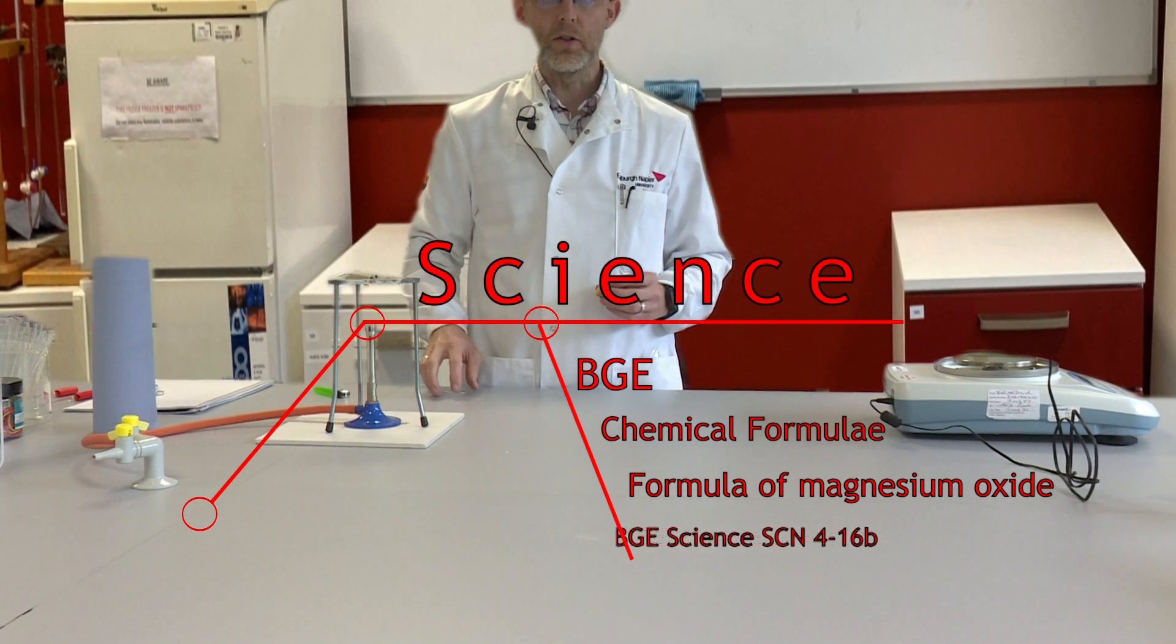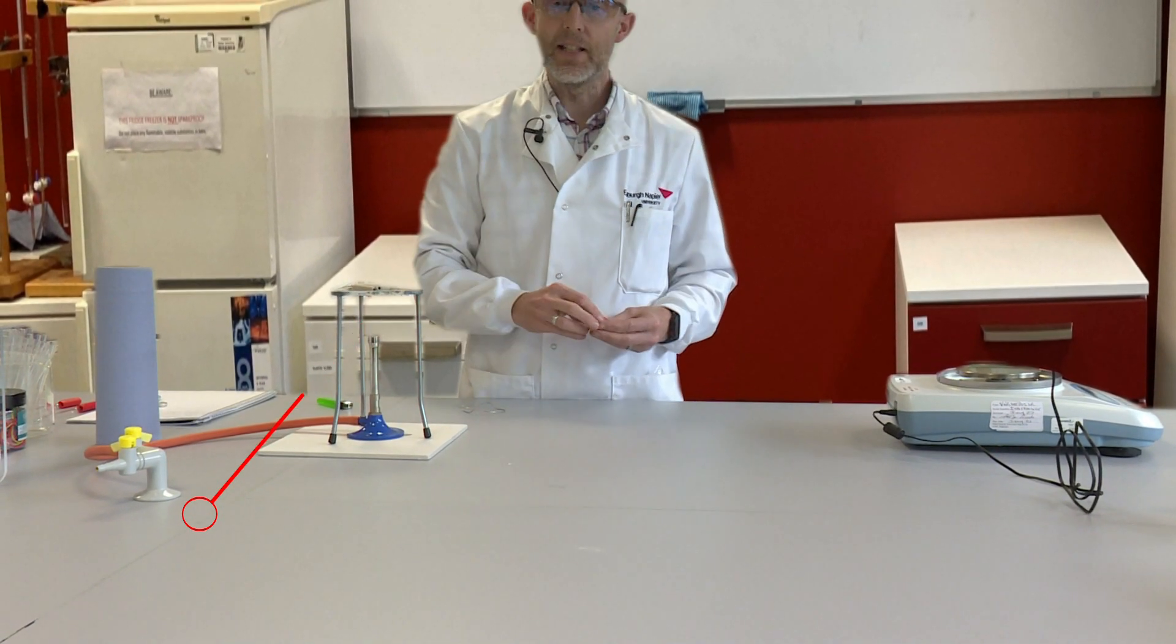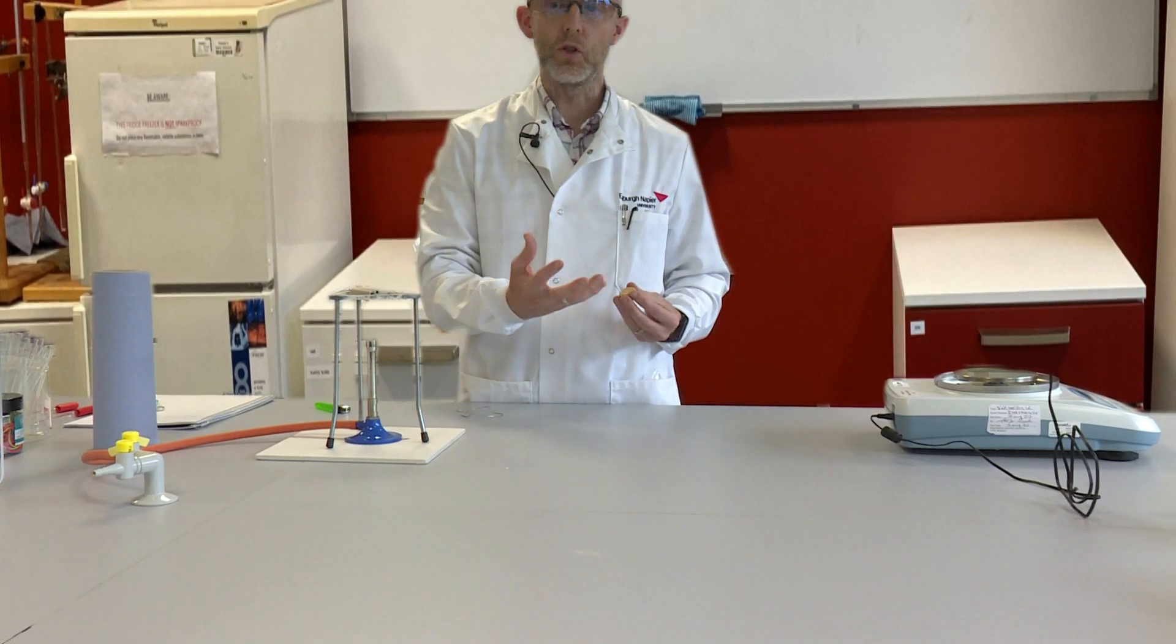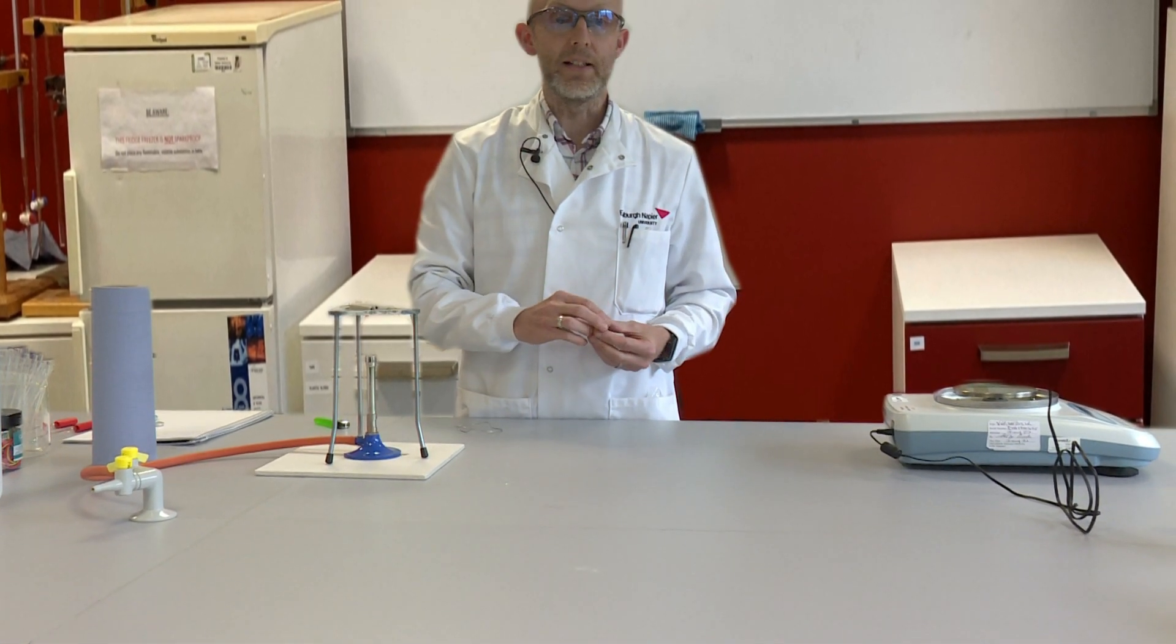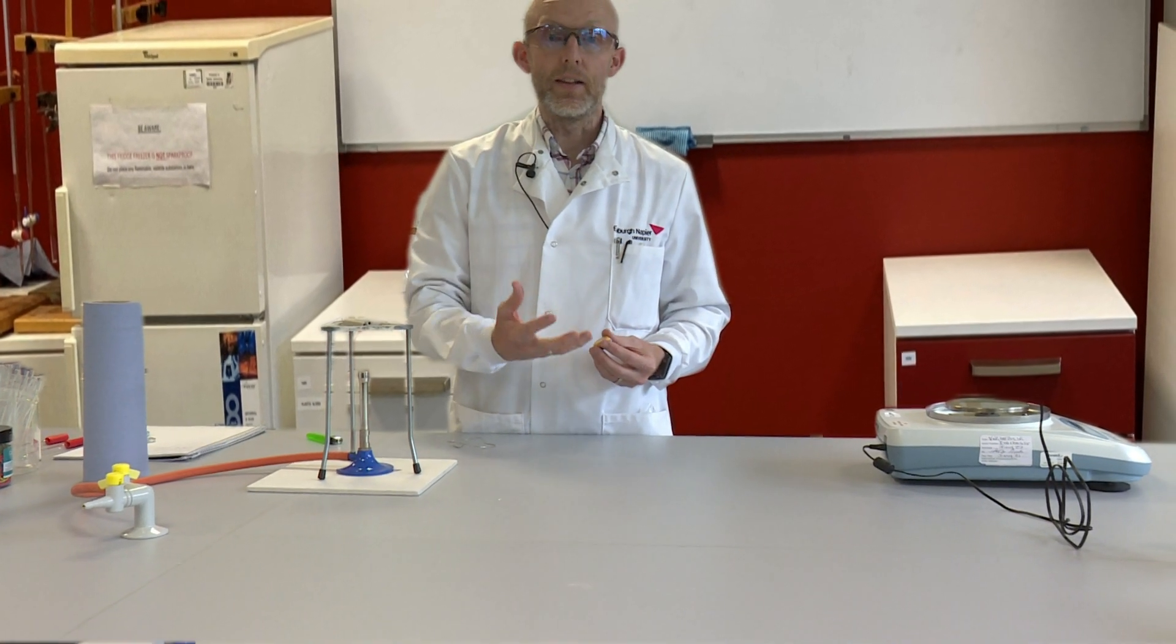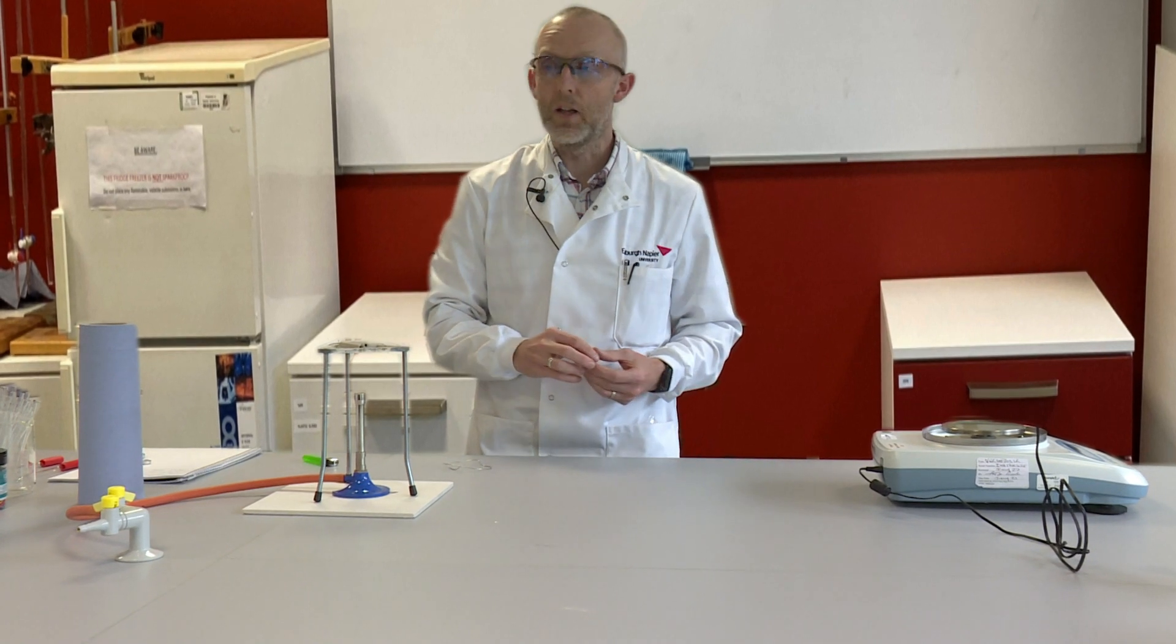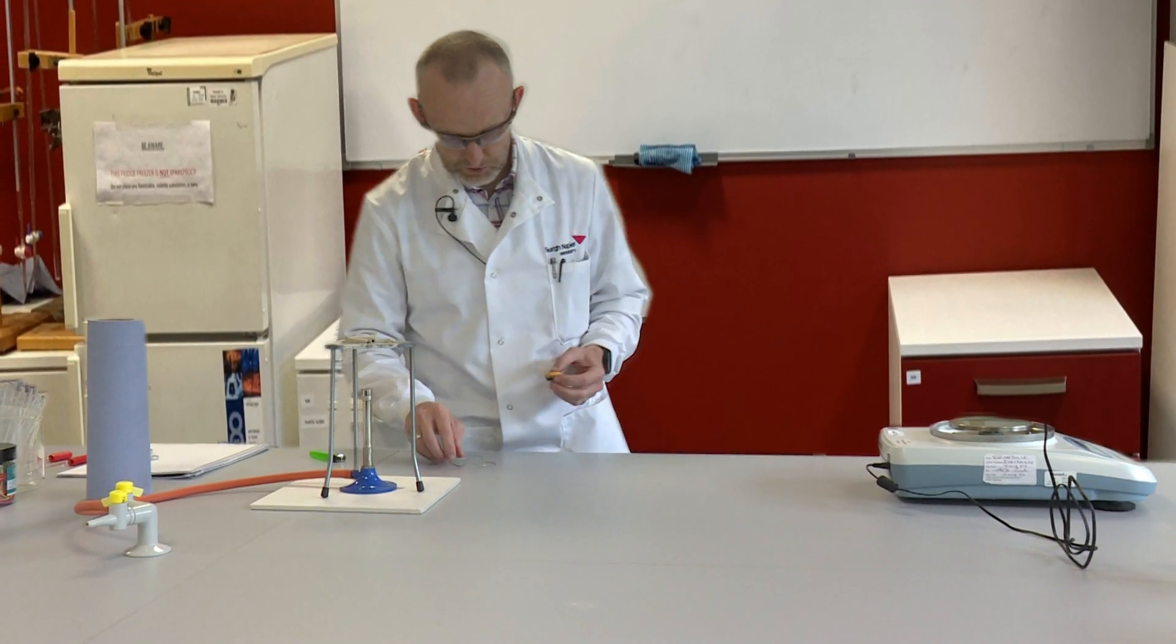In this experiment we're going to work out the formula of magnesium oxide. We're going to take some magnesium and roast it in air to form magnesium oxide. Then by taking the mass of the magnesium that we start with and the magnesium oxide that we form, we'll be able to calculate the formula of magnesium oxide.